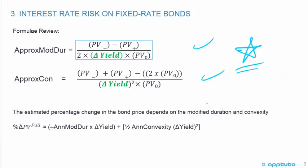In this new LOS, we're given the modified duration and convexity and need to calculate the percentage change in the price of the bond. The formula to memorize is: the percentage change in price equals the negative annual modified duration times the change in yield, plus one-half the annual convexity times the change in yield squared. As rates increase, the price goes down — that's why the duration term is negative. If rates go down, prices go up, and the sign works out accordingly.